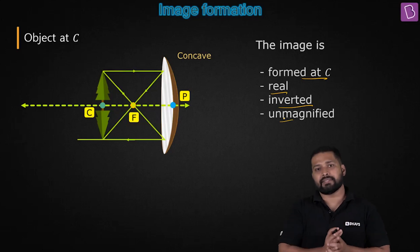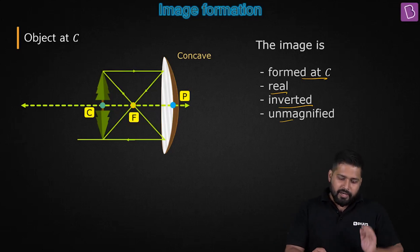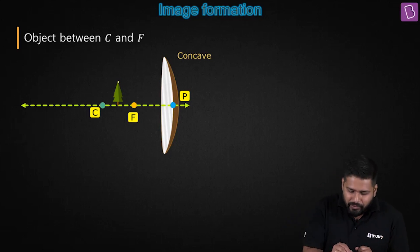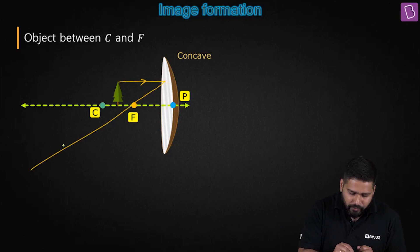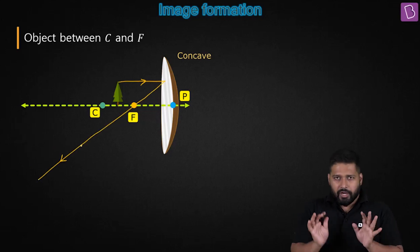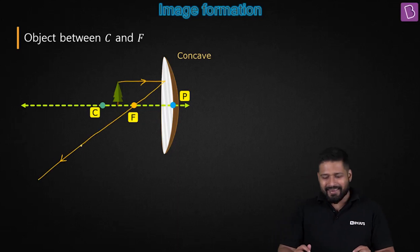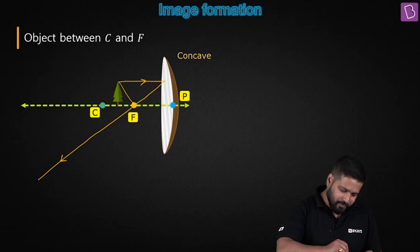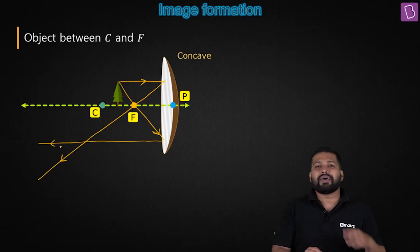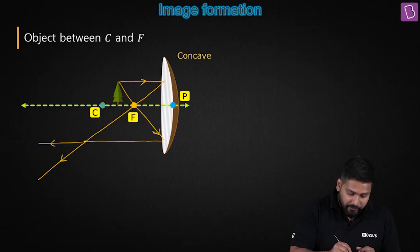It's neither magnified nor diminished — it's unmagnified. Next, let's bring the object between C and F and see what happens. I choose one parallel ray, and I know it is going to pass through the focus. Then I choose a ray passing through the focus, and I know it will emerge parallel to the principal axis. Where is it meeting? It's meeting beyond C, so you are going to get an image somewhere beyond C.